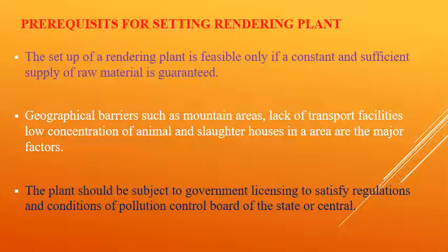We have briefly discussed the important machinery for a rendering plant. Now we will discuss some prerequisites and general considerations for establishing a rendering plant or carcass utilization plant. The setup is feasible only if a constant and sufficient supply of raw material is guaranteed. Geographical barriers such as mountain areas, lack of transport facilities, and low concentration of animals and slaughterhouses in the area are major factors. Plants should also be subject to government licensing to satisfy regulations and conditions of the pollution control board.